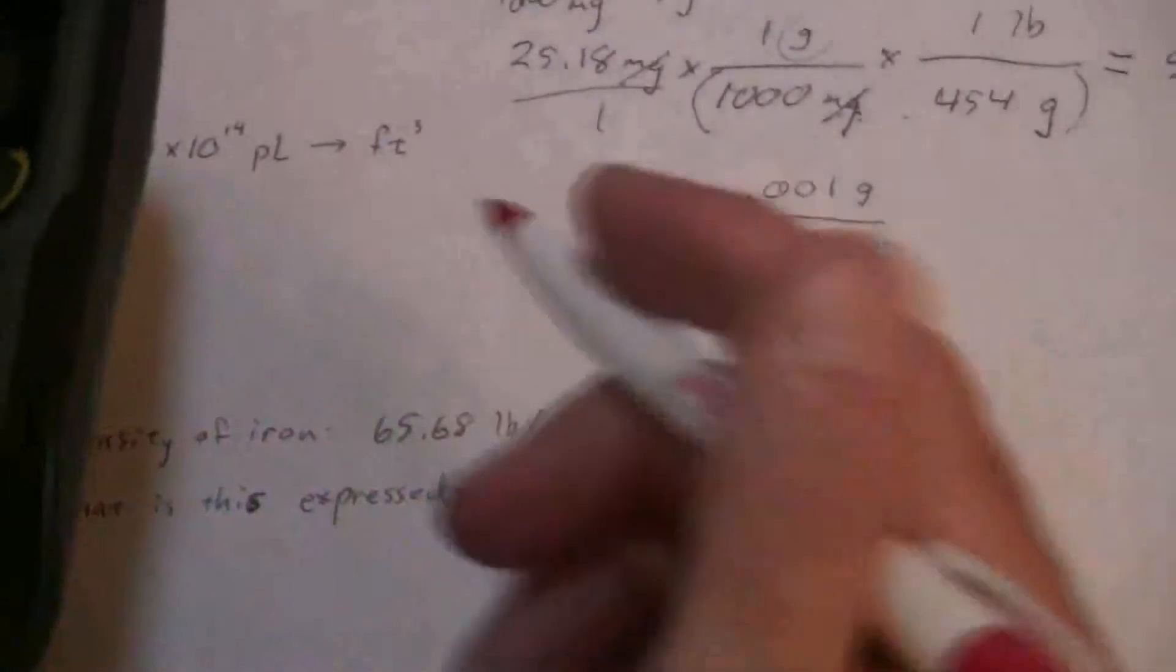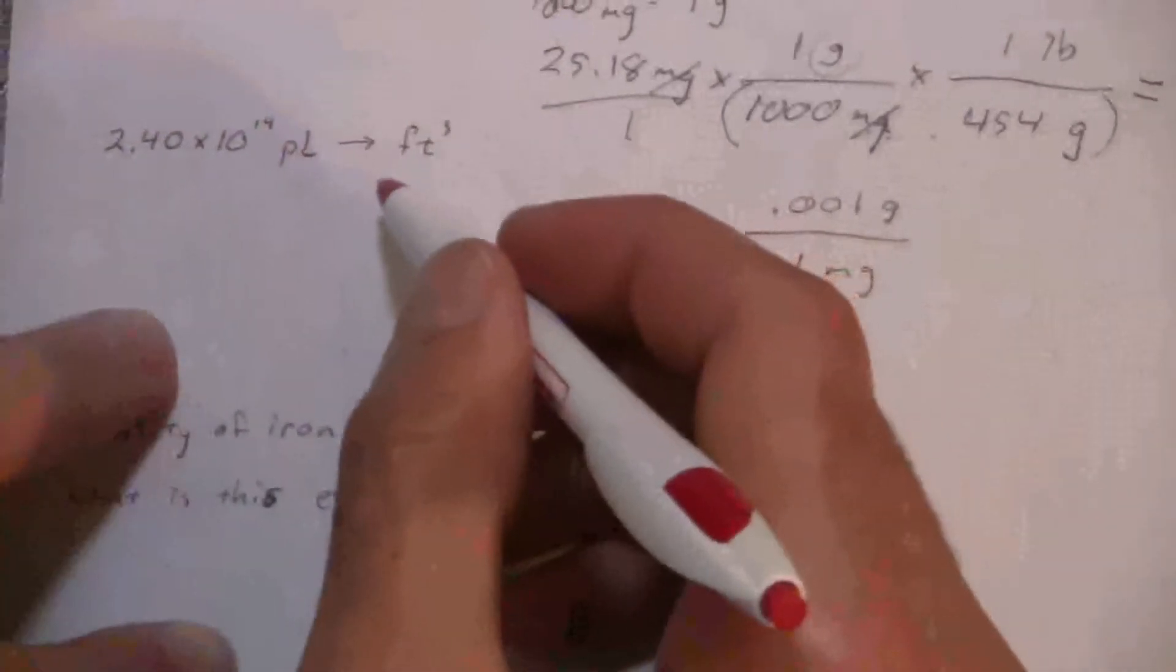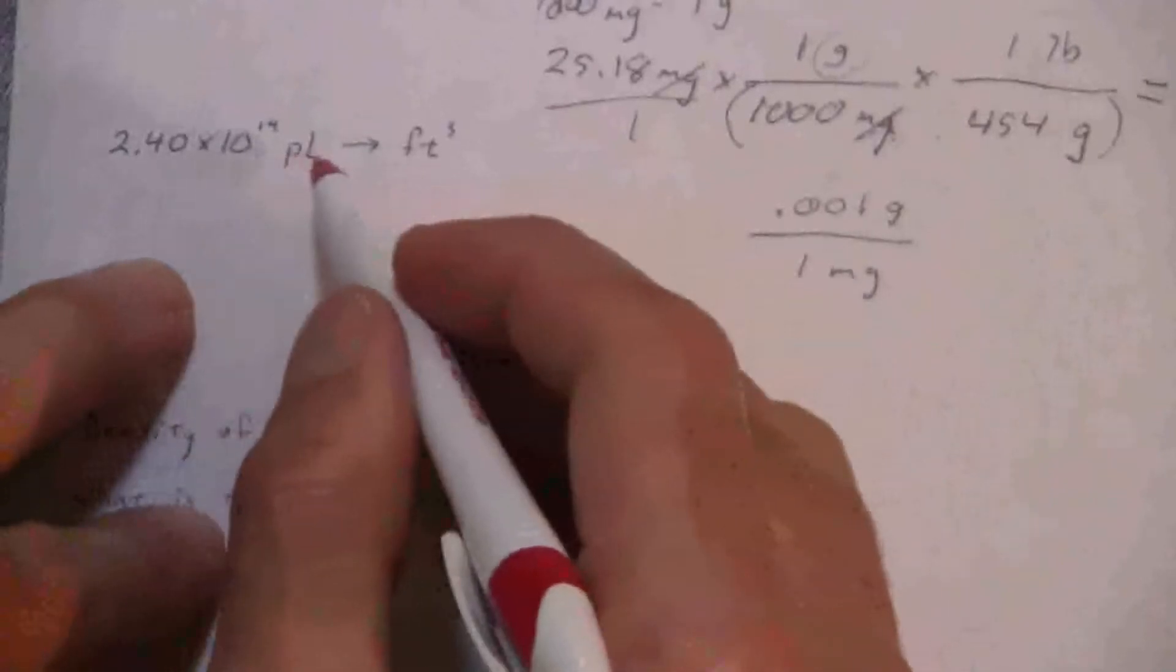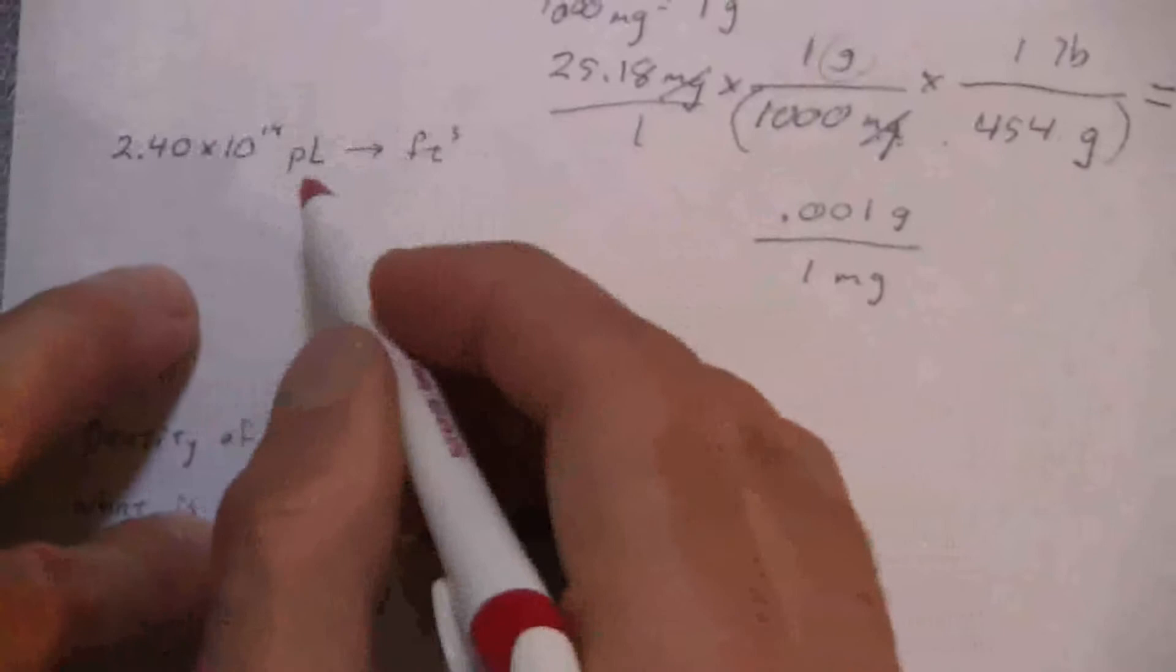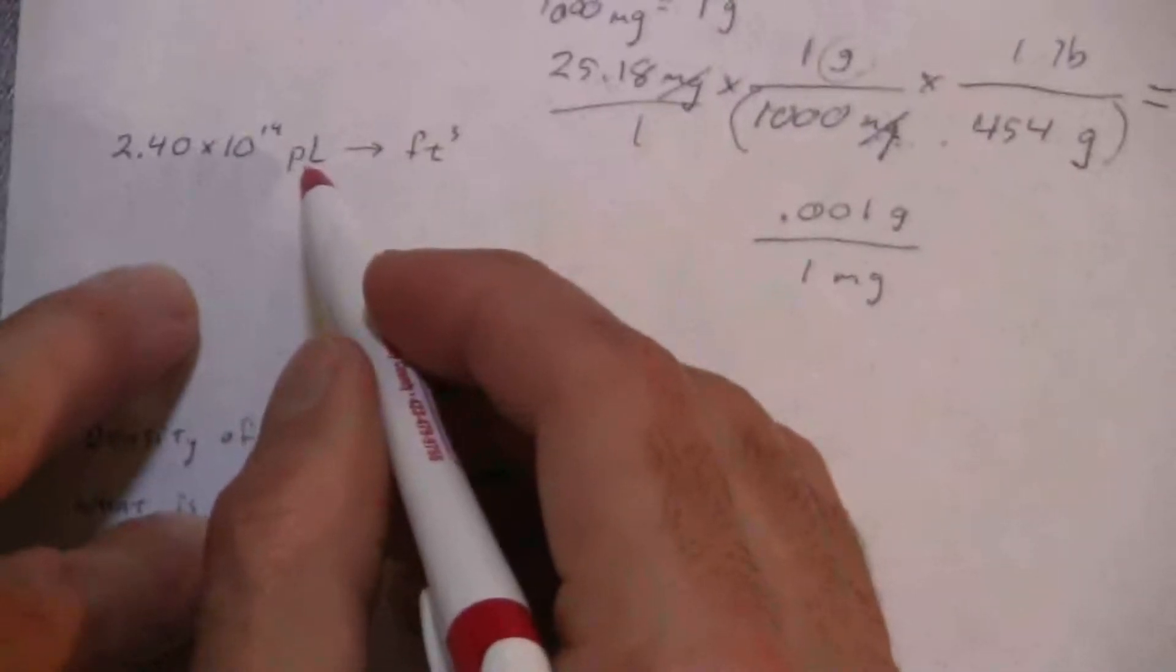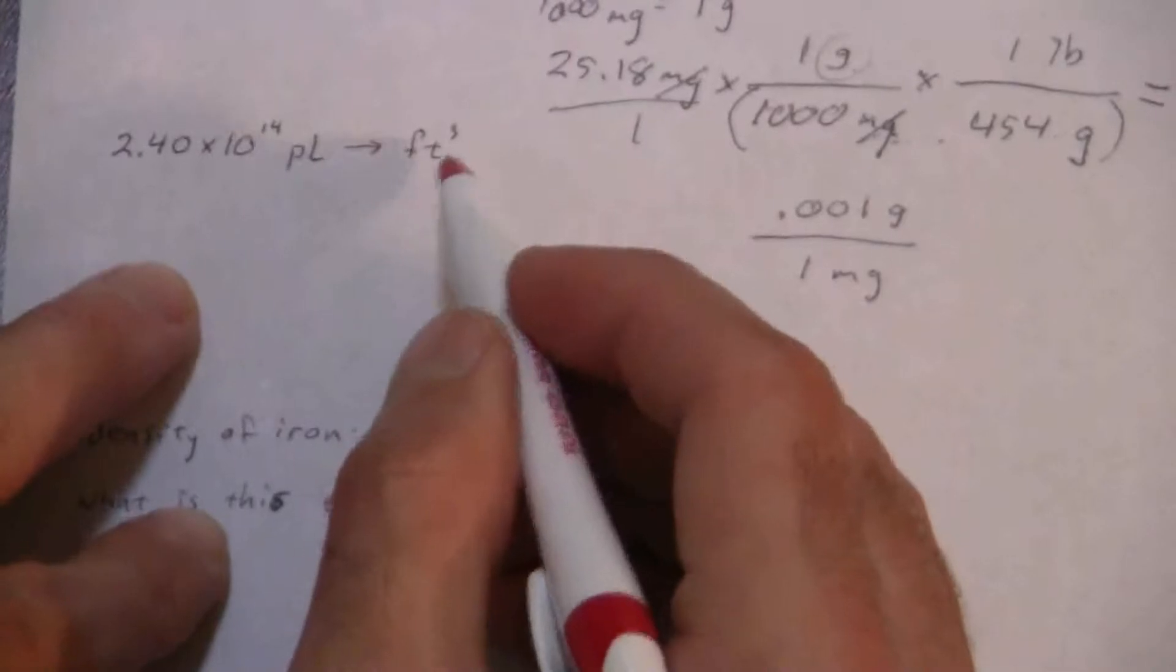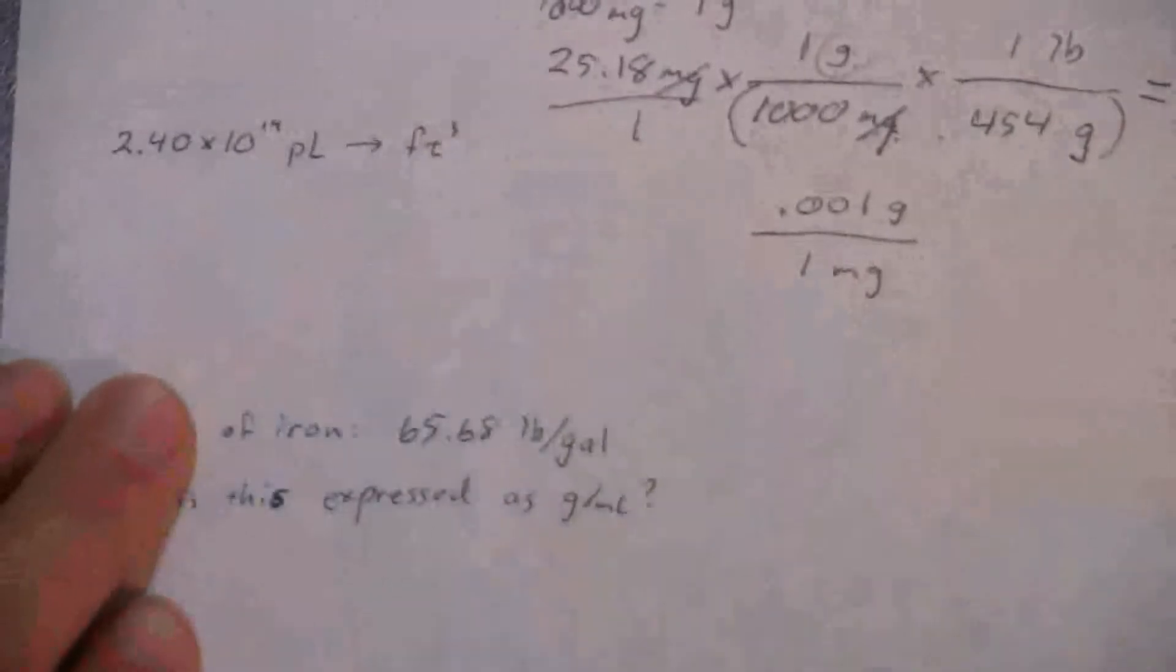All right, let's move on to the next problem here, which I'll have to move because I don't have enough room. And this one, this is a good problem because it's going to give us a number of conversions here. Picoliters to cubic feet. They certainly don't have a direct conversion factor for those.